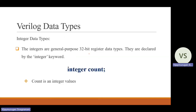Next, we discuss other data types of Verilog HDL. The first one is the integer data type. Integer is a general purpose 32-bit register data type. This type of data type is declared using the keyword integer. For example: integer count — where count is a variable that can hold an integer value such as 4 or 5.